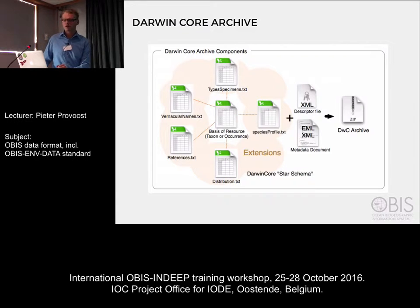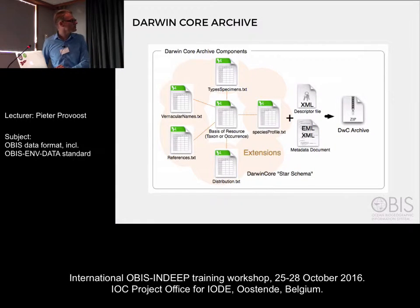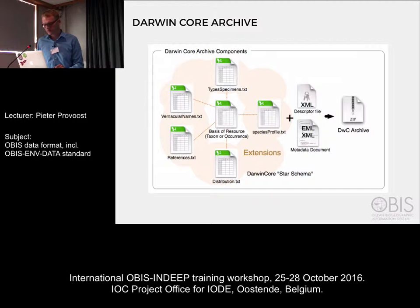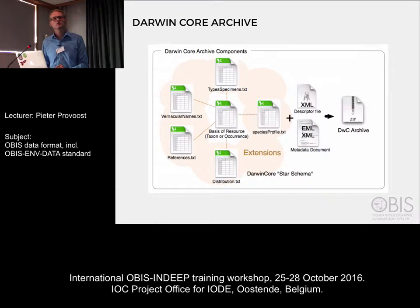A Darwin Core archive is basically just a zip file with some text files in there. You'll always have two XML files: the first one being the archive descriptor, which tells you what all the other files in the archive are and what they contain. Then there's the EML file which contains the dataset metadata. And then you also have one or more text files which contain the actual data — these are just CSV or text delimited files.